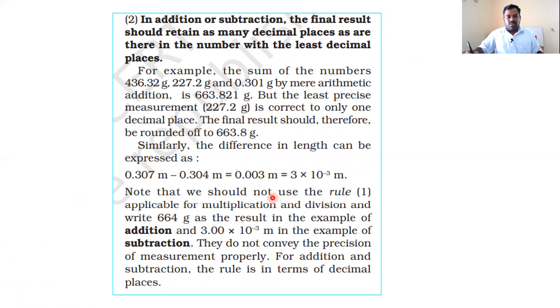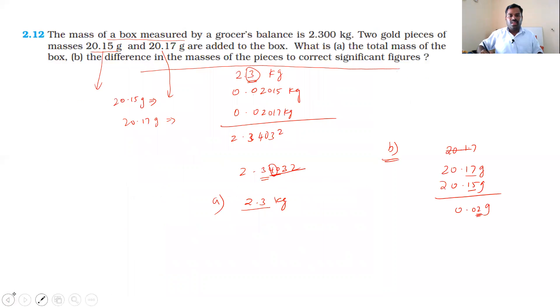Note that we should not use the rule applicable for multiplication and division like 0.307 minus 0.304. For addition and subtraction, the rule in terms of decimal places applies. They do not convey the precision of measurement properly in terms of significant figures. So the answer 0.02 grams is correct.